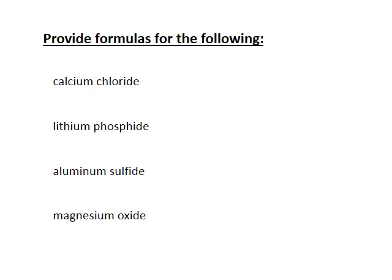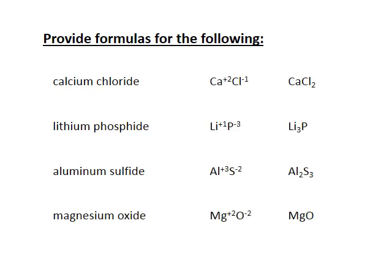Writing formulas requires knowing which ions are involved. For calcium chloride, calcium is in the plus two column and chlorine in the minus one column, so the crisscross gives CaCl₂. For lithium phosphide, lithium is plus one and phosphorus minus three, giving Li₃P. Aluminum sulfide gives Al₂S₃ by crisscross. For magnesium oxide, plus two and minus two combine directly to give MgO — no crisscross needed since they cancel immediately.